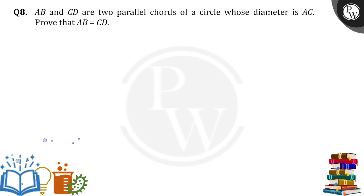Hello everyone, AB and CD are two parallel chords of a circle whose diameter is AC. Prove that AB is equal to CD. How can we do that? Let's have a diagram here. This is the circle we have.